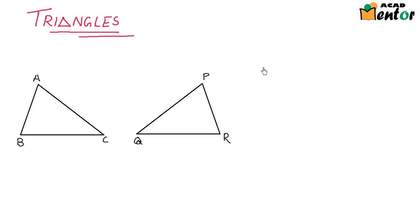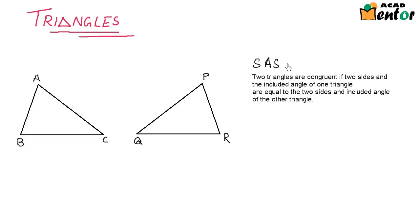There is an axiom which is also known as the SAS congruency condition. The SAS congruence condition says that two triangles are congruent to one another if two sides and the included angle of one triangle are equal to the two sides and the included angle of the second triangle. Let us have a look at what that means.